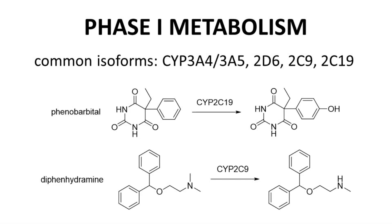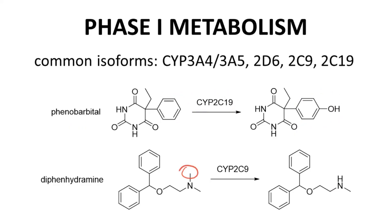The cytochrome P450 enzymes catalyze most Phase I reactions. There are many CYP enzymes, with just a handful being relevant for drug metabolism. CYP3A4 and 3A5 are particularly important. Others include 2D6, 2C9, and 2C19. Most CYP reactions are oxidations and involve addition of an oxygen to a molecule, such as the oxidation of an aromatic ring in phenobarbital by CYP2C19, or cleavage of a methyl group from the nitrogen in diphenhydramine by CYP2C9.